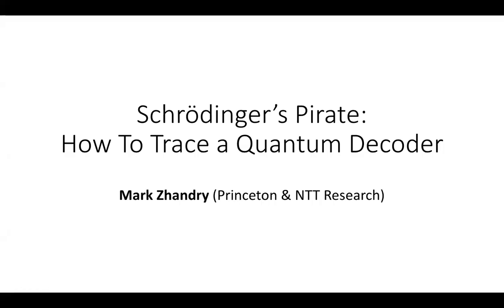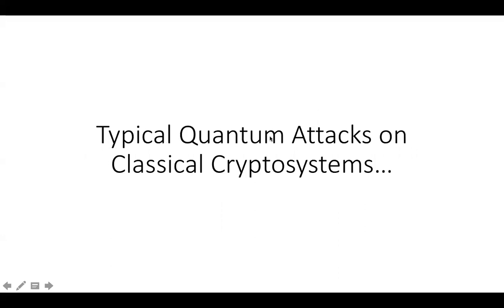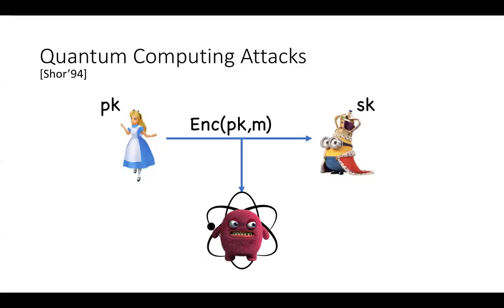Hello, today I'm going to talk about traitor tracing in the presence of a quantum computer. First, let me recall some typical attacks on classical cryptosystems. The first, most basic such attack is what I'll call a quantum computing attack, where an attacker is perhaps listening to communication between Alice and Bob and using the power of a quantum computer to decrypt the communication.